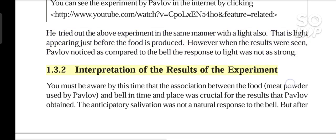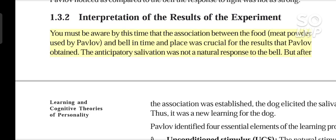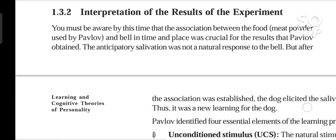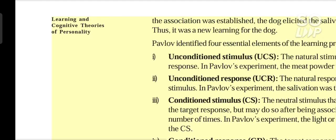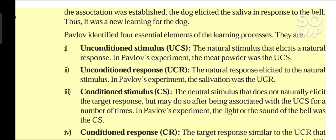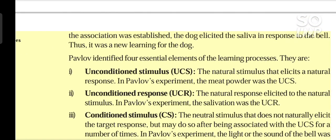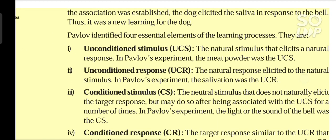The association between the food — meat powder used by Pavlov — and the bell in time and place was crucial for the results that Pavlov obtained. The anticipatory salivation was not a natural response to the bell. But after the association was established, the dog elicited saliva in response to the bell. Thus it was a new learning for the dog.